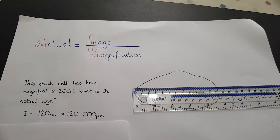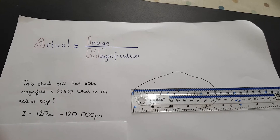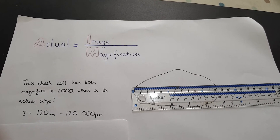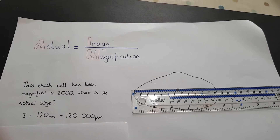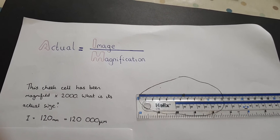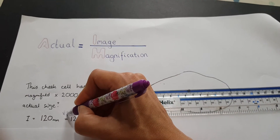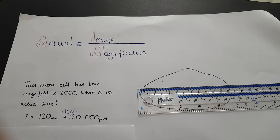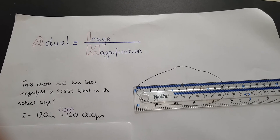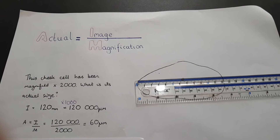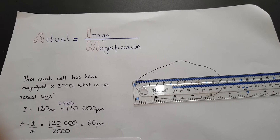The appropriate units for cell size are micrometers, so the best thing to do is to convert the image size into micrometers at this stage — though you can also convert at the end if you prefer. The image size is 120 millimeters; we multiply by 1,000 to get 120,000 micrometers. Then we put that into the equation: actual size equals image divided by magnification, so 120,000 divided by 2,000 gives an actual size of 60 micrometers.